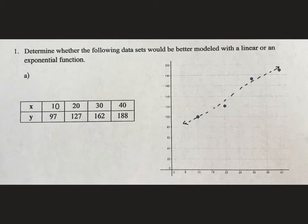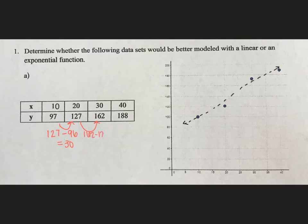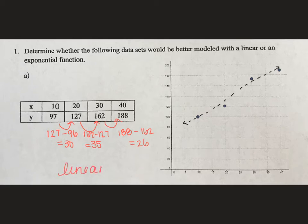Or we can use the same method from before, seeing if our y values are changing by relatively the same number. Going from 97 to 127, we subtract: 127 minus 97 equals 30. Then 162 minus 127 gives us 35. And 188 minus 162 gives us 26. These are all relatively the same number, so this would be a linear function. Our y values are changing by adding almost the same value — somewhere around 30 each time.